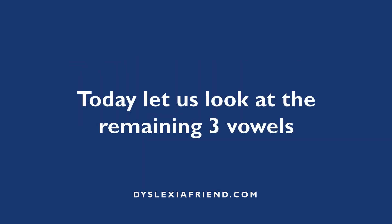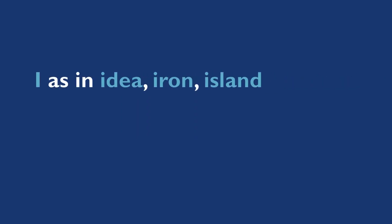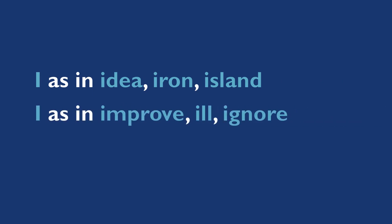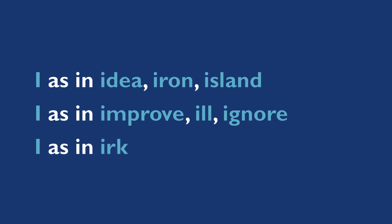Today, let us look at the remaining three vowels: I, O, and U. The letter I represents the following sounds: I as in idea, iron, island; I as in improve, ill, ignore; I as in irk.